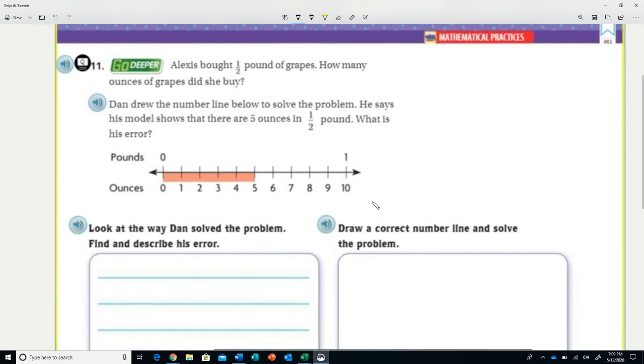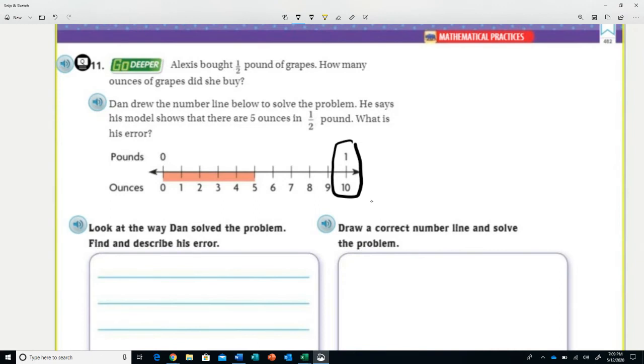The problem is that pounds don't use a base 10. The pounds or ounces - 10 ounces does not equal one pound. So his error is right here because this is not correct. One pound does not equal 10 ounces. One pound is 16 ounces, so he really needs to extend this line out here until he gets to 16 and one pound. So his error is 10 ounces does not equal one pound.